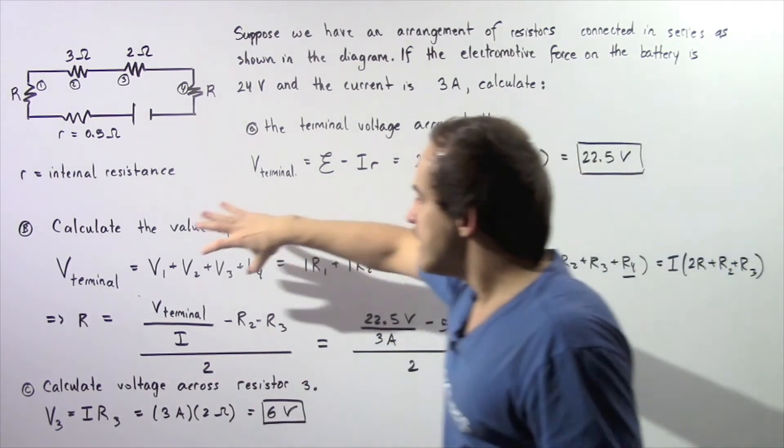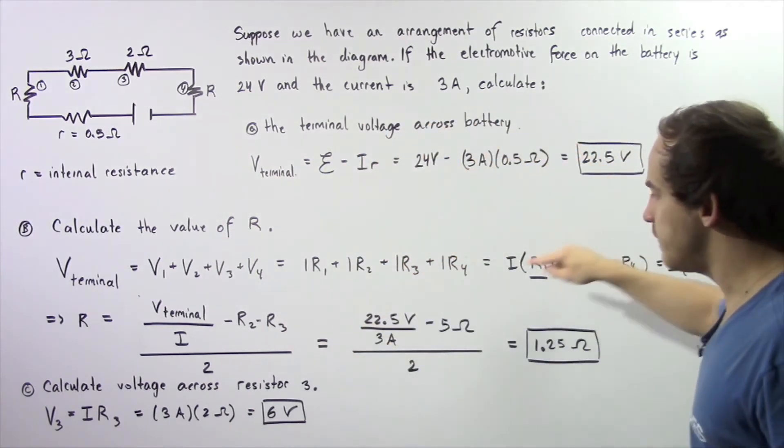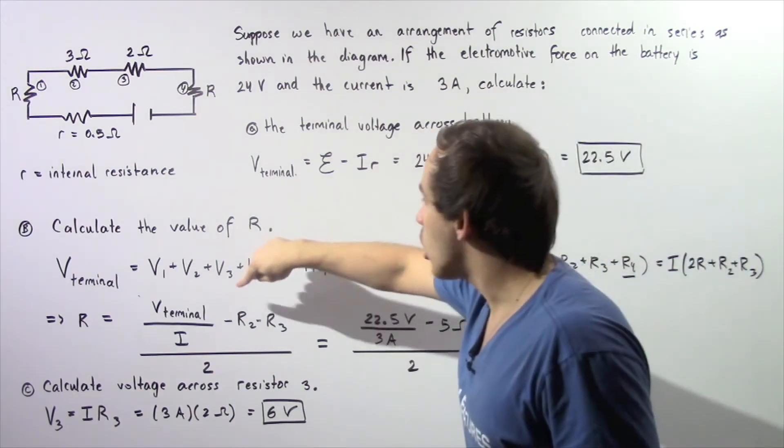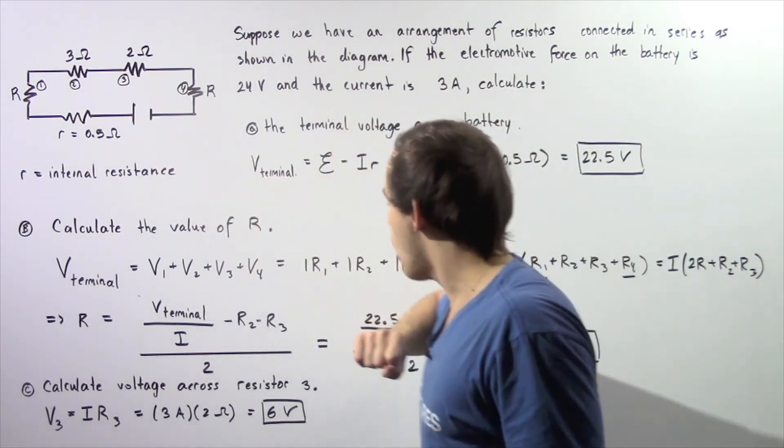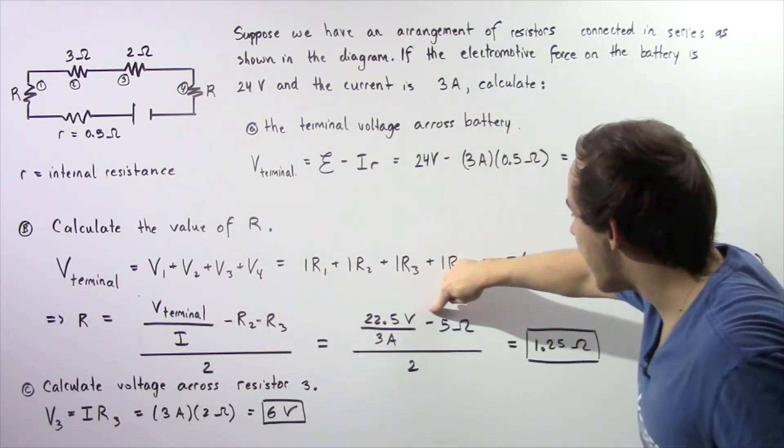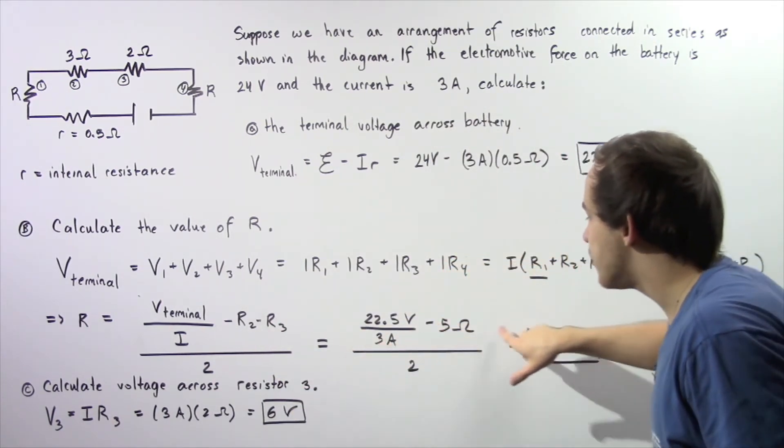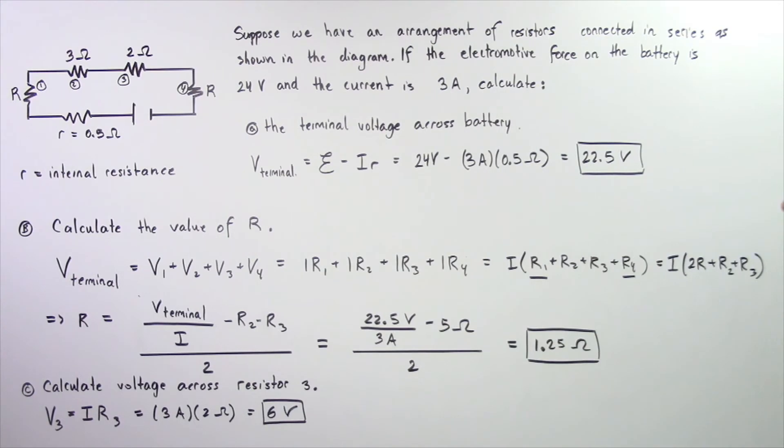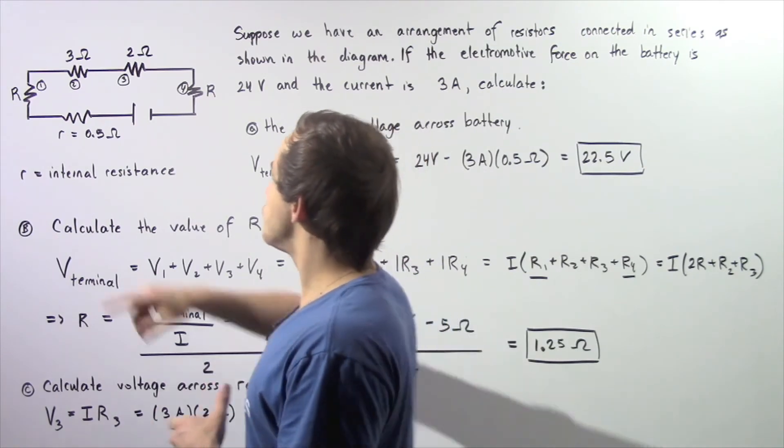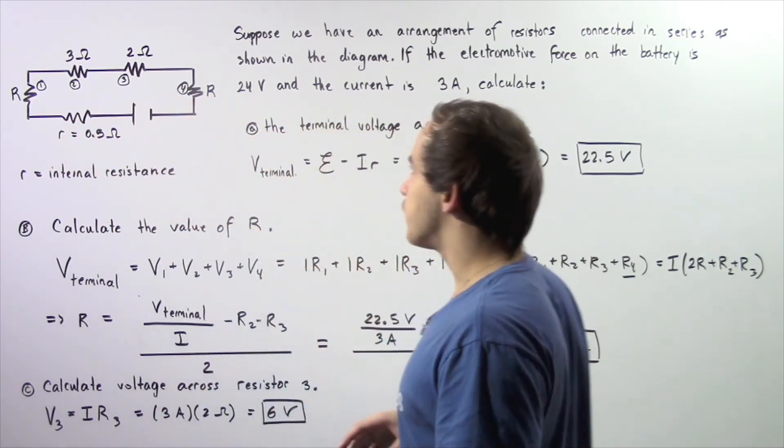So V-terminal was found to be 22.5 volts. Our I is 3 amps. R2 is simply 3 ohms. R3 is 2 ohms. We combine that, we have minus 5 ohms and divide that by 2, and that gives us 1.25 ohms, which is the quantity of resistance found on resistor 1 and resistor 4.